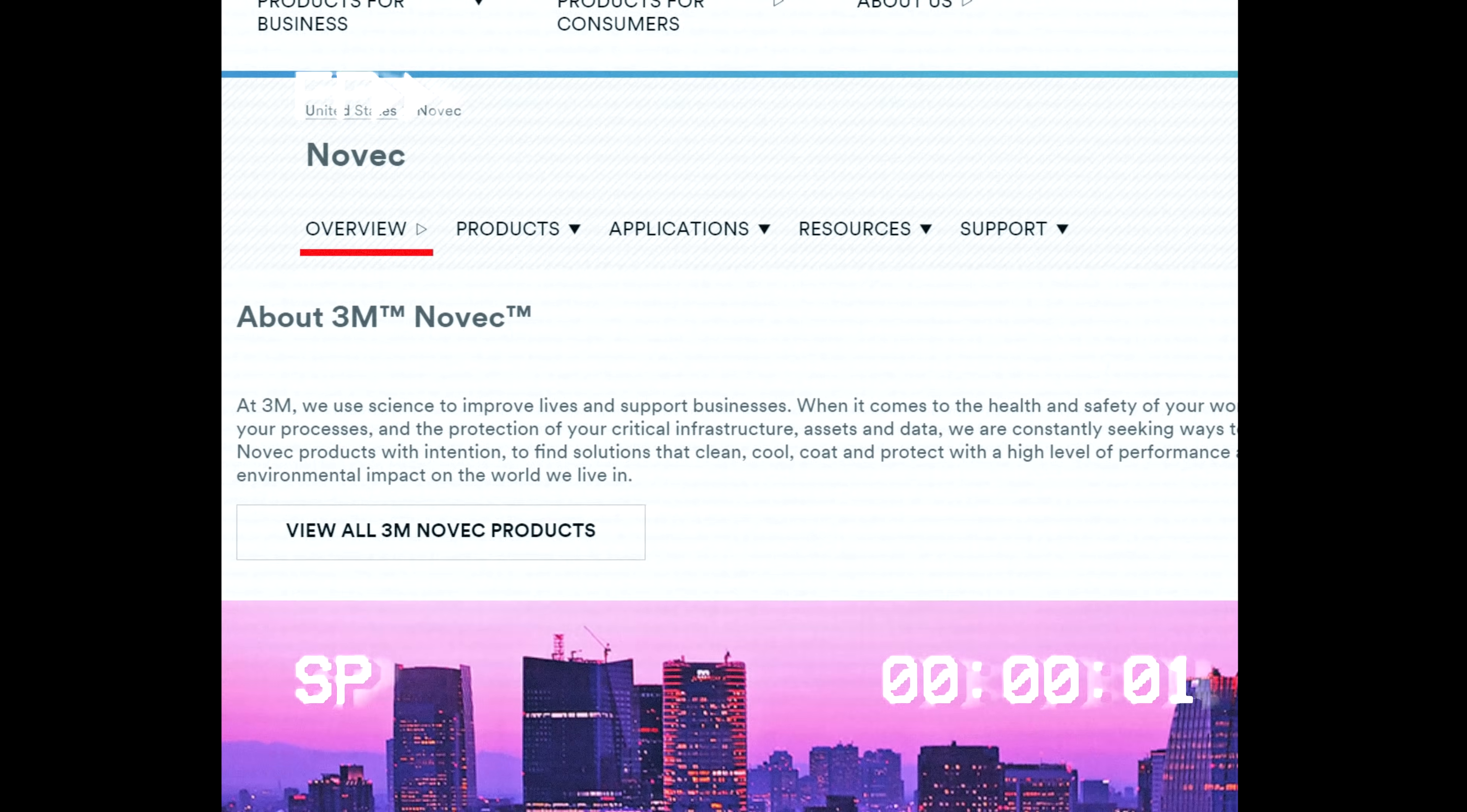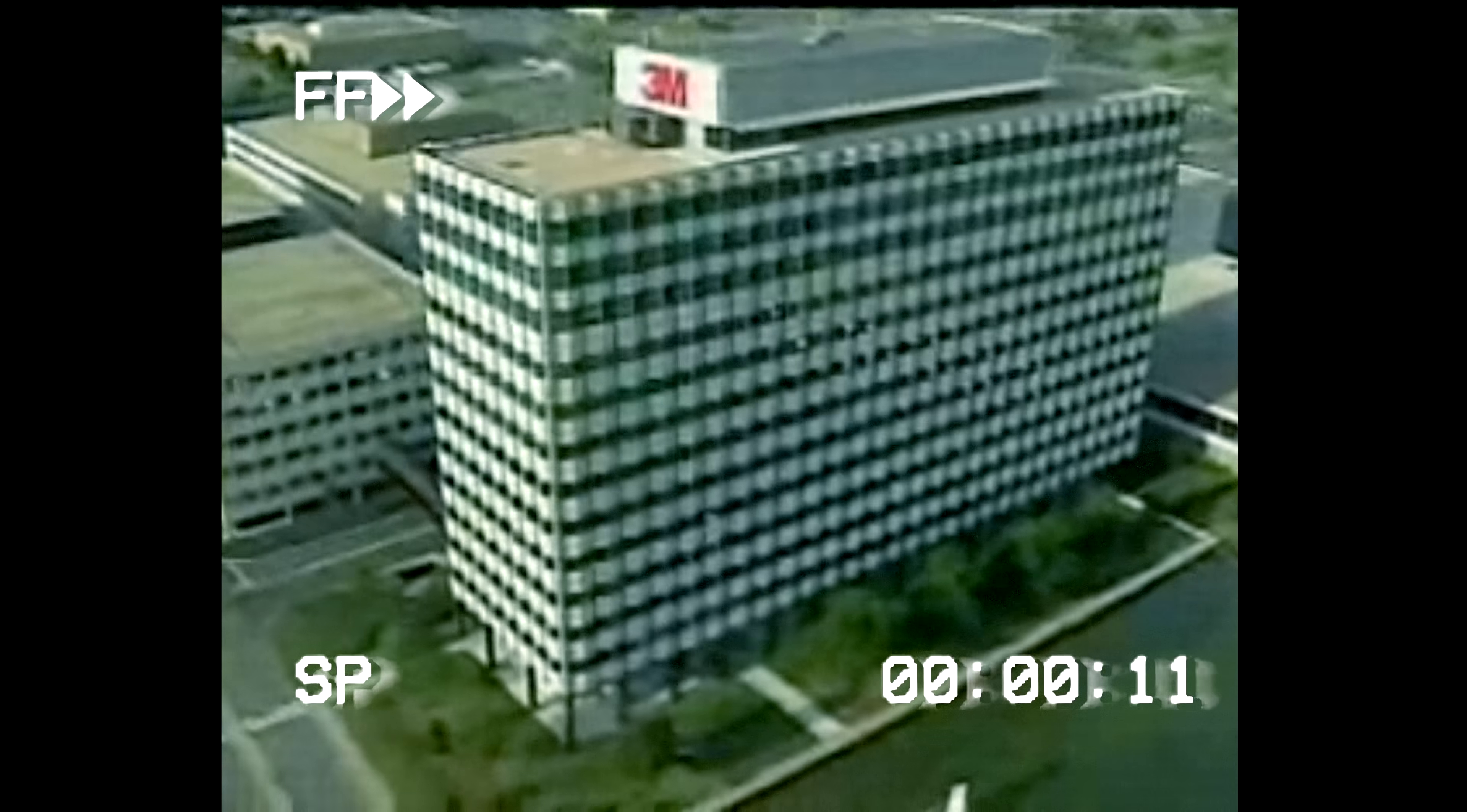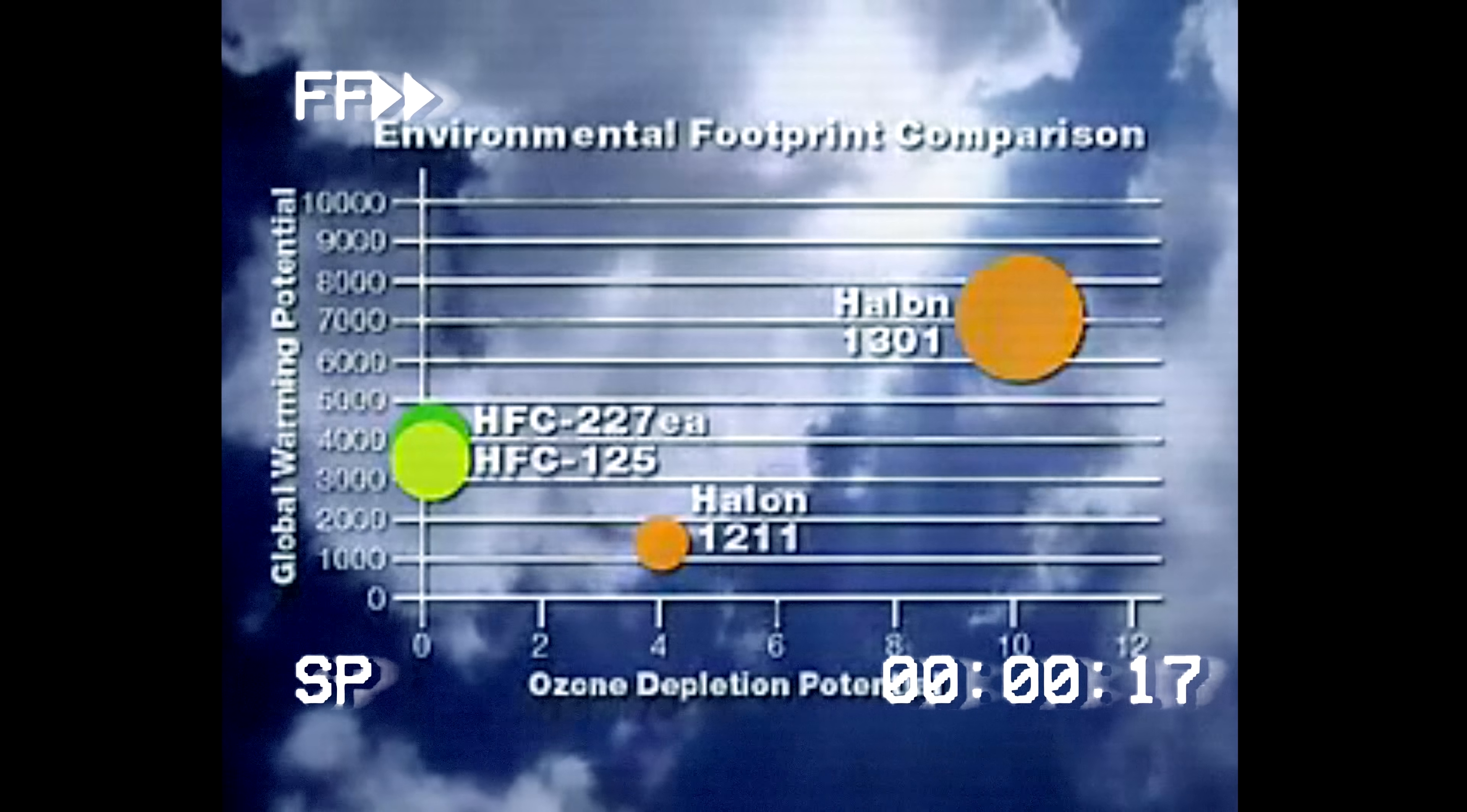In reality the so-called dry water also has a more scientific name which is NOVEC. This fluid was created by the 3M company in the 1990s as a refrigerant to substitute for ions which deplete the ozone layer.